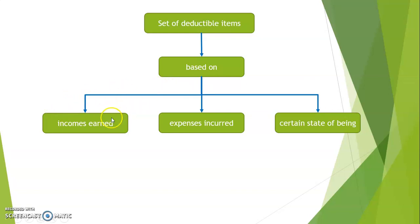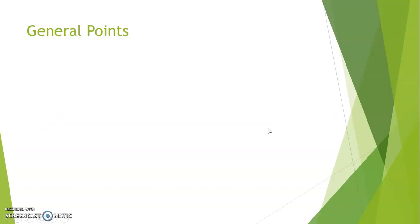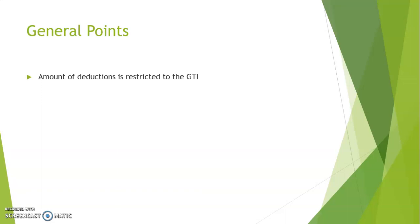Now let's move on to certain general points to keep in mind while dealing with deductions. First: the amount of deductions is restricted to gross total income. We saw in the table that deductions are made from gross total income. So our deductions cannot exceed our gross total income — the least our total income can become is zero. For example, if gross total income is one lakh rupees and our eligible deductions are two lakhs, we can only deduct one lakh.